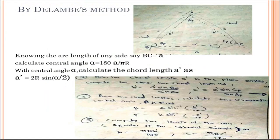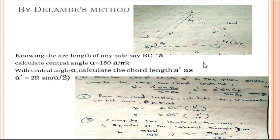Another method is Delambre's method. In Delambre's method, the three stations A, B, C are joined by chords. The plane angles are the angles between these chords. Let Aₚ, Bₚ, Cₚ be the plane angles. The following steps should be adopted to determine the length: knowing the arc length of any side, say BC = A, calculate the central angle α as α = 180A / (πR).